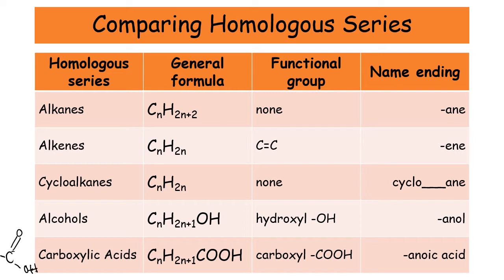When it comes to the endings of each series: alkanes end in -ane, alkenes end in -ene, cycloalkanes also end in -ane but you need to put cyclo at the start. Alcohols always end in -anol, and whenever you're indicating the position of the alcohol you put a number between -an- and -ol, for example propan-2-ol. For carboxylic acids, their ending is -anoic acid. Do not forget to write the word acid at the end — it is propanoic acid, not just propanoic.